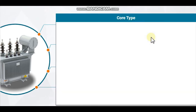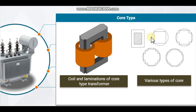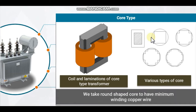In sandwich coils, leakage can be controlled. This image shows the coil and laminations of the core type transformer, and here are the various types of cores. We take a round-shaped core to have minimum winding copper wire. Here, the core type transformer is shown.